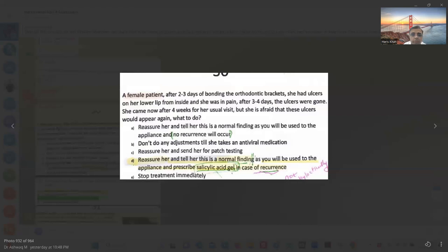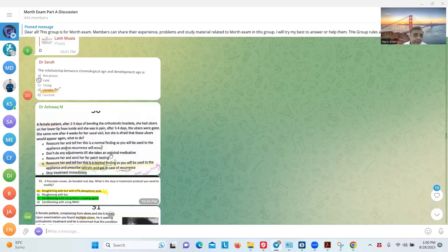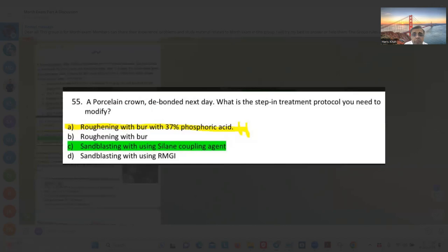A female patient with tooth bonding in orthodontics. She had ulcers on her lower lip from the inside. She was in pain. After three or four days, ulcers were gone. She came now after four weeks, was usually okay, but she's afraid. Reassurance. And tell her this is a normal finding as you are used to the appliance, and prescribe a gel in case there is recurrence. D.